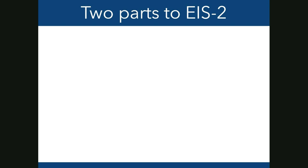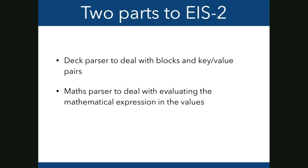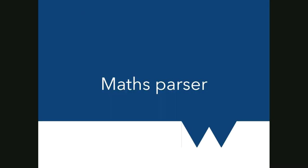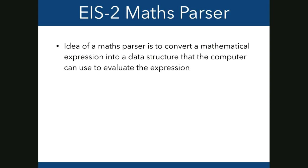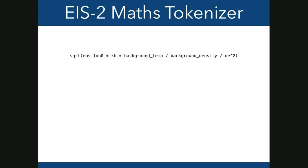EIS-2 is actually composed of two separate parts: a deck parser that deals with blocks and key-value pairs, and a maths parser that evaluates the mathematical expressions on the right-hand side. You have to only trigger the maths parser when appropriate, since some keys in EPOC's deck really are strings. The maths parser converts a mathematical expression into a data structure a computer can use — technically consisting of a tokenizer or lexer, a parser, and an evaluator.